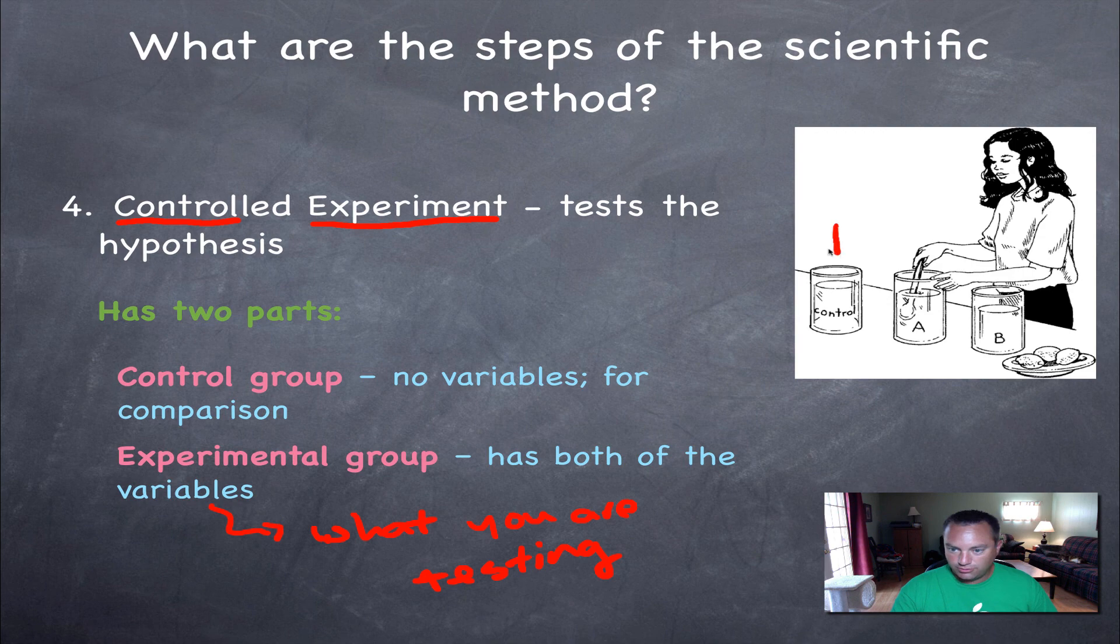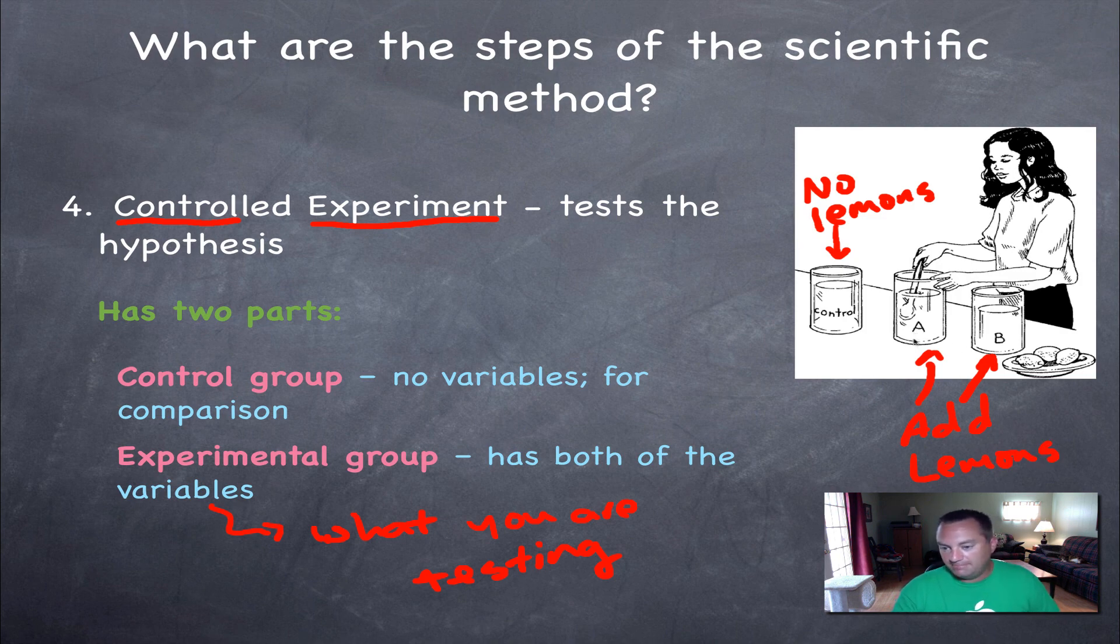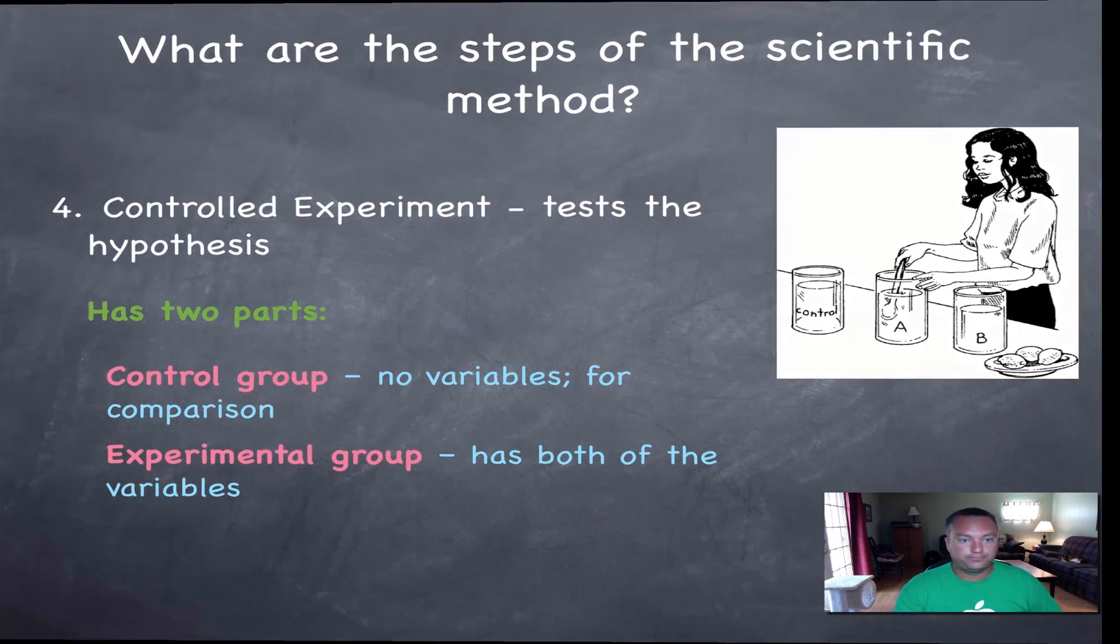So over here in this picture, as you can see in this one right here, here's her control group. And I don't know. You think those are lemons or something right there? So in here, we're going to say no lemons. And over here in these two groups, this lady is going to add the lemons. So maybe in group A, she's going to squeeze one lemon. Maybe over here, she's going to squeeze two lemons. But basically, once again, in your control group, no variables, totally for comparison. In these two groups, you're going to add a variable. And out of these variables, you're going to observe some type of change, hopefully. And that change is going to lead to the collection of data.